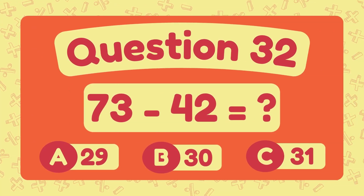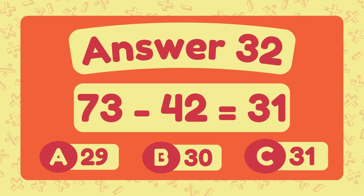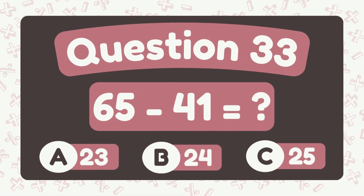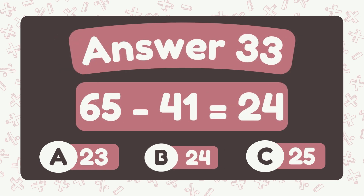What is seventy-three minus forty-two? The answer is thirty-one. What is sixty-five minus forty-one? The answer is twenty-four.